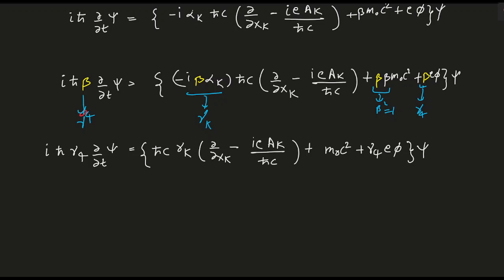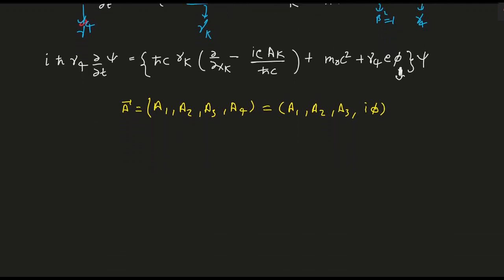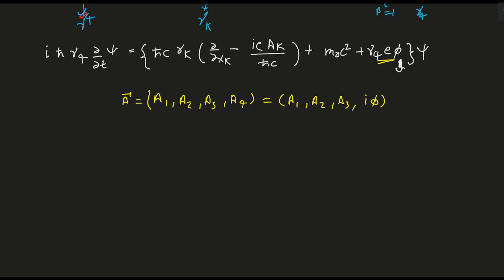Now we handle the phi term. The magnetic vector potential has four components A_1, A_2, A_3, and the fourth component is A_4 equals i phi. To convert e phi into a form involving A_4, we use the fact that 1 equals minus i squared, so we can write e phi as minus i times i e phi, which gives us e times i phi, identifying this as e A_4.